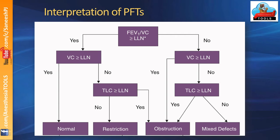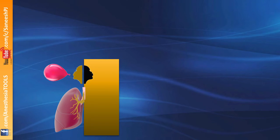On the other side of the algorithm, if the FEV1/FVC ratio is normal or acceptable, you are either dealing with a normal PFT or being deceived by a proportionate reduction in FEV1 and FVC. Check the FVC: if it is normal, you can confidently say the PFT is normal. But if FVC is reduced, look at total lung capacity — a reduced TLC clearly indicates restriction, while normal TLC with reduced FVC points toward obstructive lung disease.